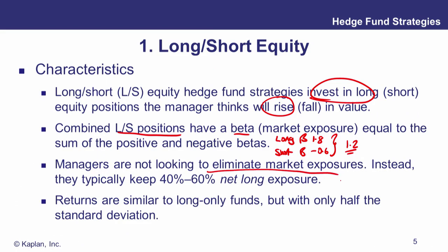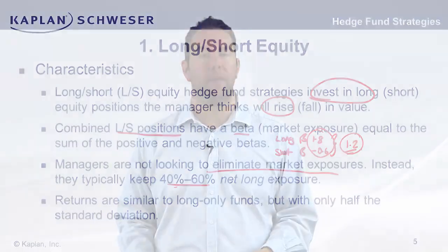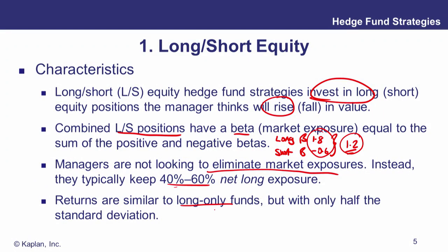Unlike an equity market neutral strategy, we're not aiming for a beta of zero here. Overall, we'll have a 40% to 60% net long exposure. In practice, studies have shown that returns are fairly similar to long-only funds, but you get those returns for only about half the risk, measured by standard deviation. So for efficient portfolio building, it's the same return for half the risk.